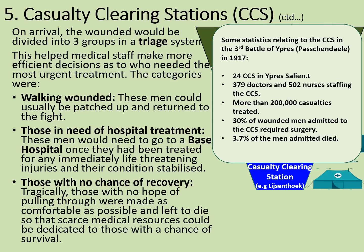Here are some statistics relating to the casualty clearing station at the Third Battle of Ypres, or Passchendaele, in 1917. There were 24 casualty clearing stations in the Ypres salient, staffed by 379 doctors and 502 nurses. More than 200,000 casualties were treated. 30% of men admitted required surgery, and 3.7% of the men admitted died — actually a pretty good survival rate, showing that despite the conditions, they did wonderful things to keep men alive.